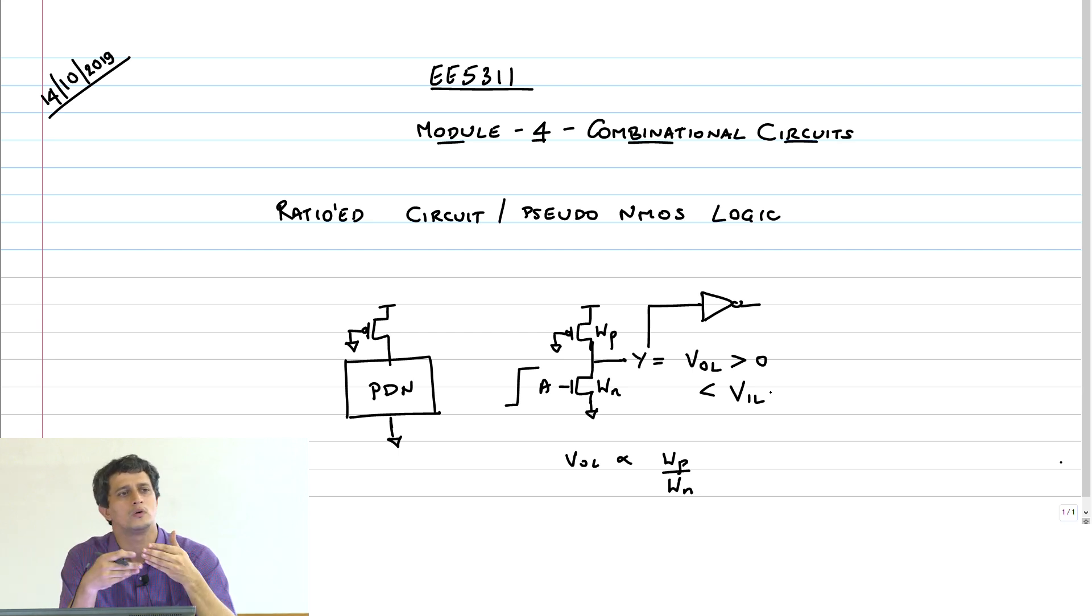The way we do it is I will give you a specification saying the VOL has to be less than this value, like 0.1 volt, and then you find out what WP by WN should be. Therefore, I will say that depending on the spec, let WP by WN equal to alpha. Is alpha greater than 1 or less than 1?